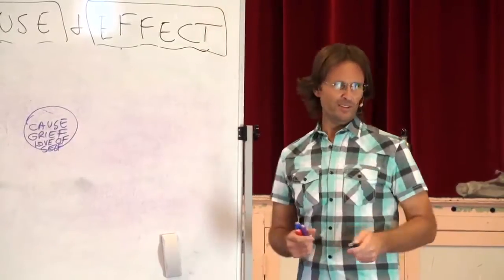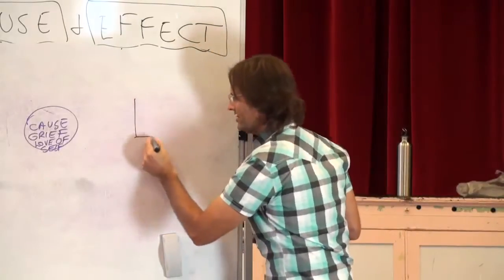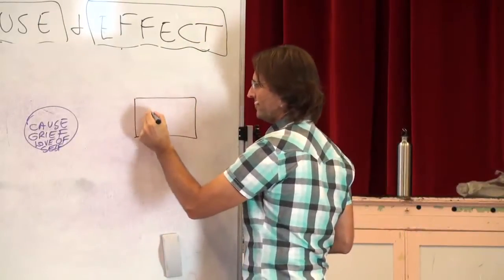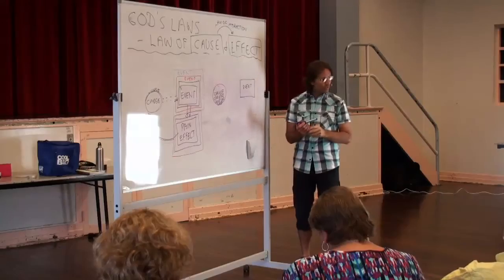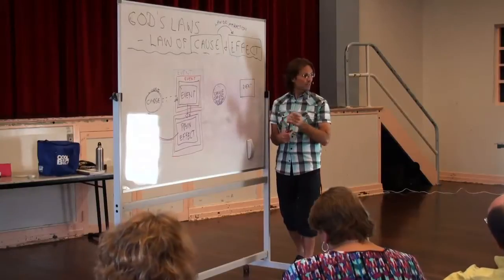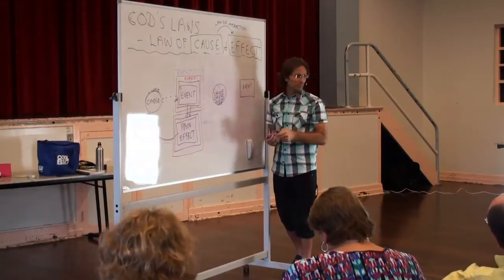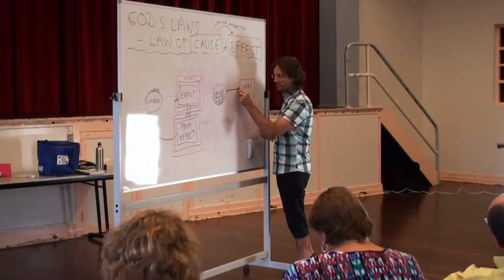Now, because we don't love ourselves and we're yet to grieve it, it creates an event. The event's purpose is to trigger the emotion that we don't love ourselves and the grief associated with not loving ourselves. Does that make sense?